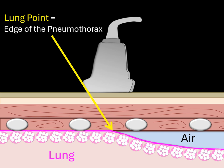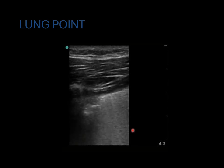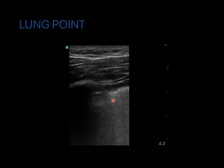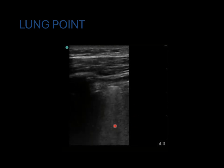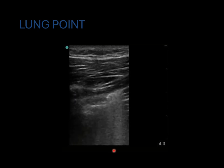Here's an illustration of the lung point. On the left part of the screen, the visceral and parietal pleura are touching, so there is lung sliding. On the right half, they're not touching, so there is no lung sliding — and that border is the lung point, pathognomonic for a pneumothorax. In this example, as the patient breathes, the two pleura touch intermittently, so lung is intermittently visible and then disappears when the pleura separate.